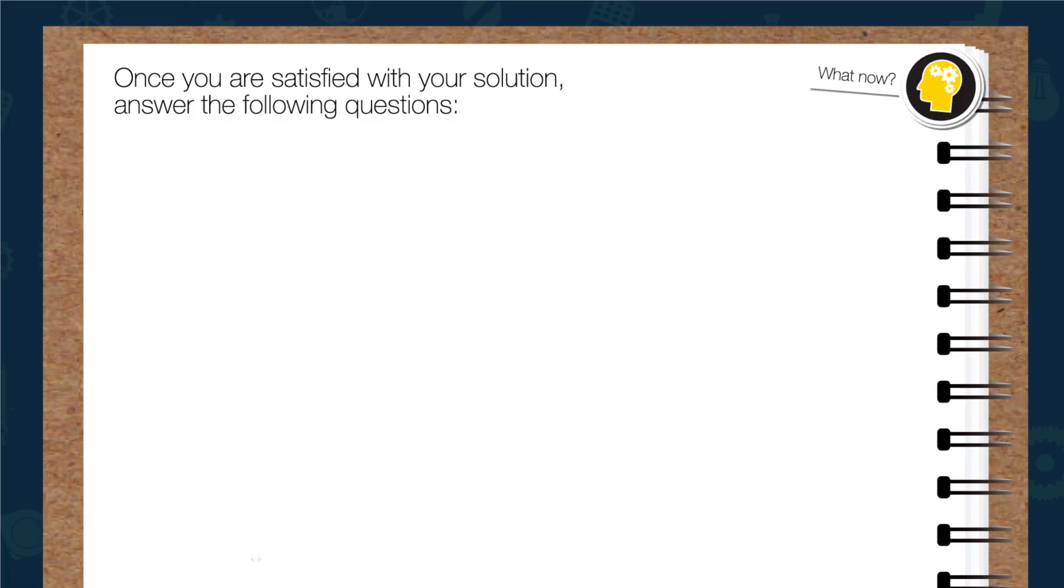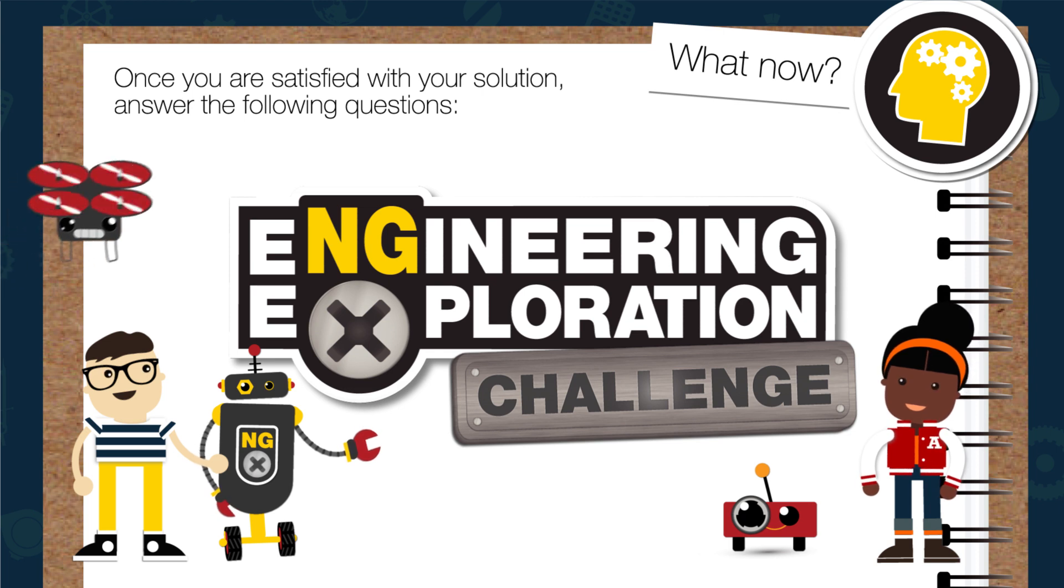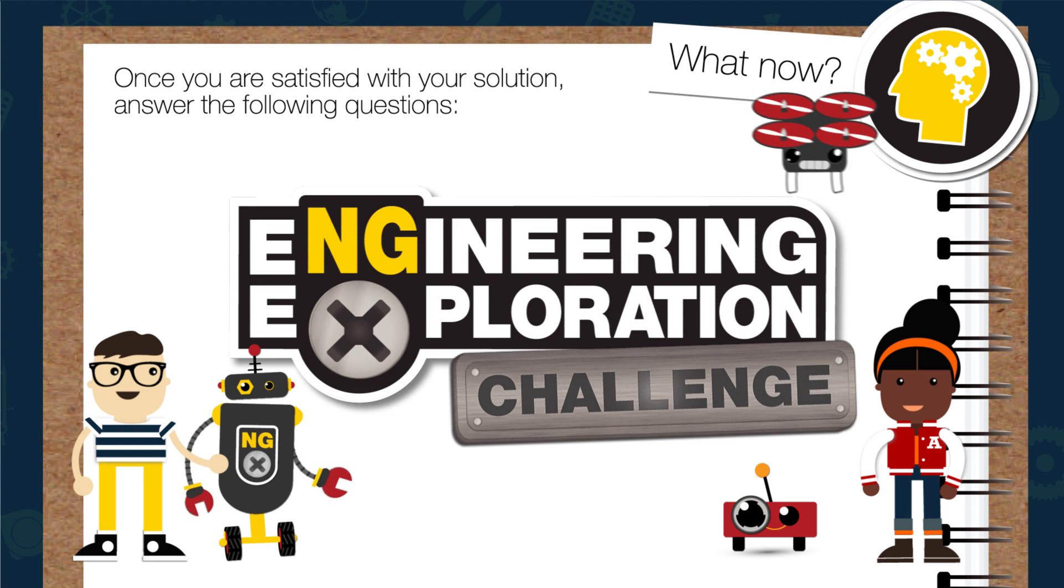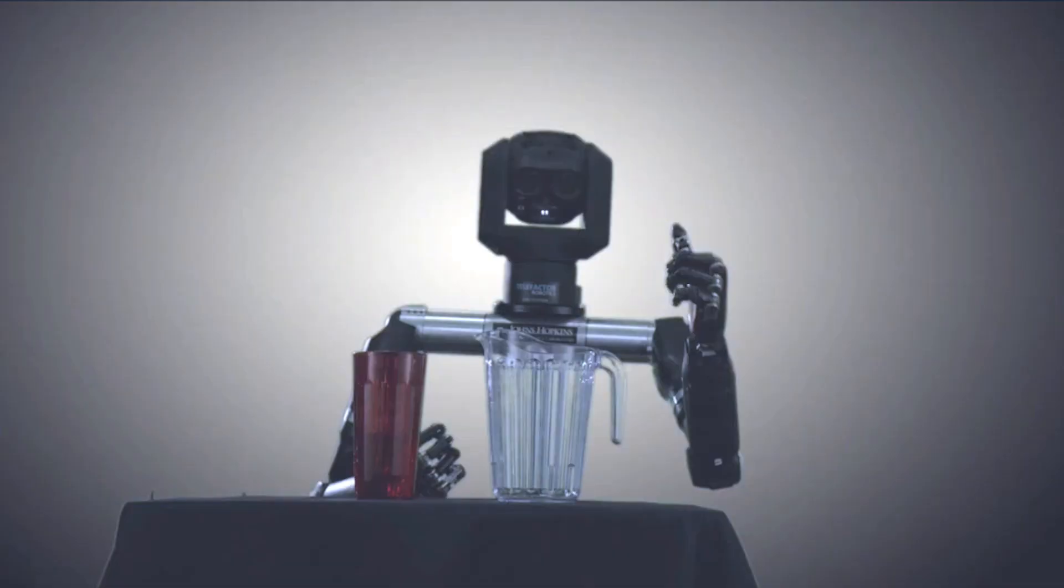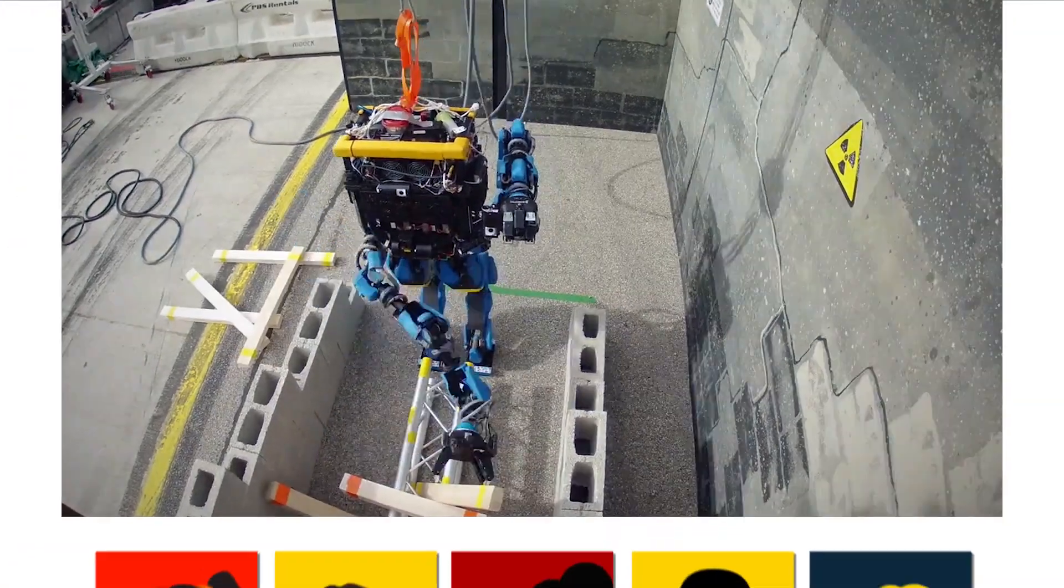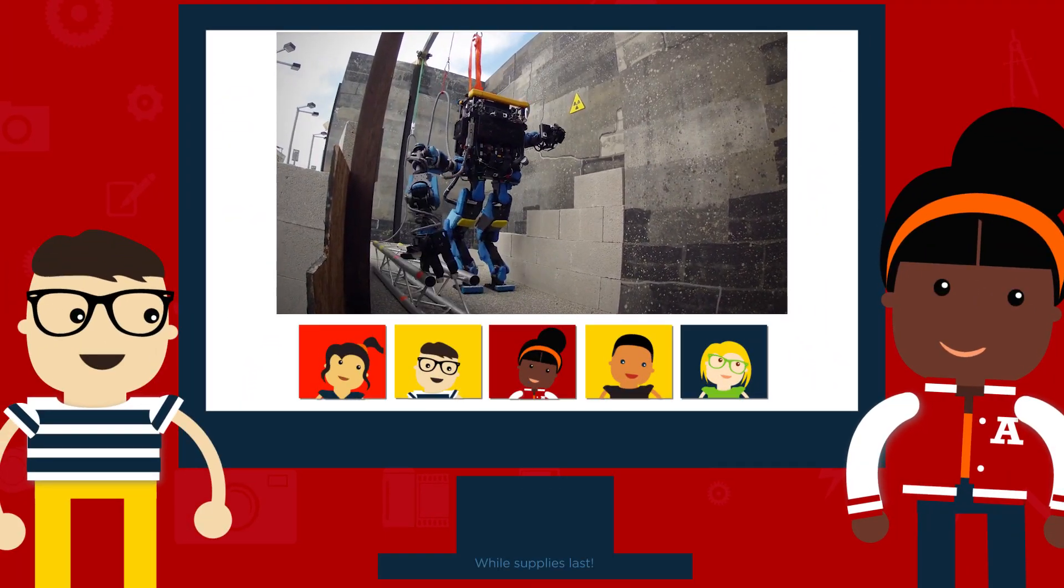When you are satisfied with your invention, enter your design into the Engineering Exploration Challenge for a chance to have your solution featured in the new National Geographic kids' book, Everything Robotics. Be sure to tune into live Google Hangouts throughout the summer to ask National Geographic engineers questions about your solution.